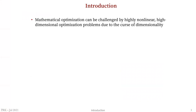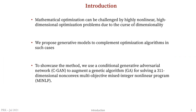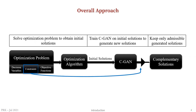Very non-linear and high-dimensional optimization problems pose many challenges to mathematical optimization because these algorithms cannot effectively explore the solution space, which is very massive in these problems. We propose generative models to complement the optimization algorithms in these cases. We use a conditional GAN to augment a genetic algorithm for solving a 311-dimensional non-convex multi-objective mixed integer non-linear programming problem. We run the optimization algorithm, get initial solutions, train the CGAN on them, and get complementary solutions filtered by the optimization constraints.